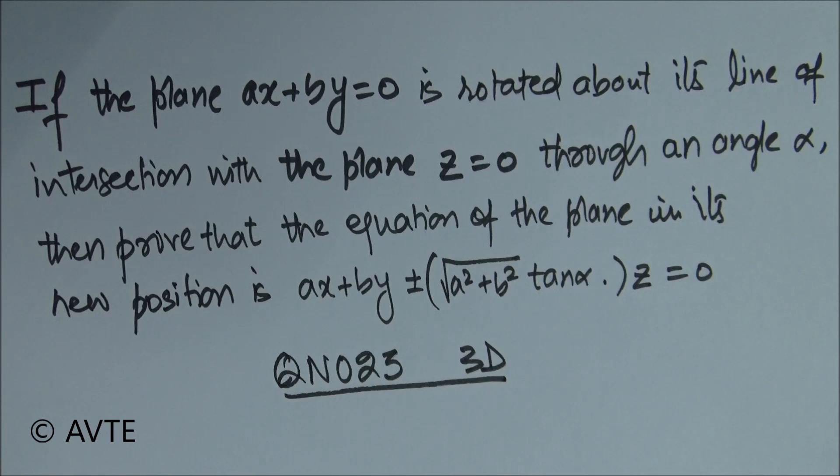That is one plane plus lambda times, or any constant times, the other plane equals to 0. So AX plus BY is equal to 0 is making an angle alpha with its line of intersection, and that is Z is equal to 0, that is AX plus BY plus lambda times Z is equal to 0. So the angle between the two planes is alpha, and the target is that whatever expression is given to us, we have to prove that.